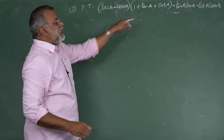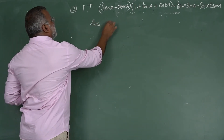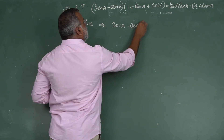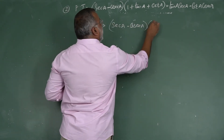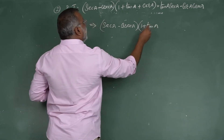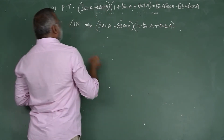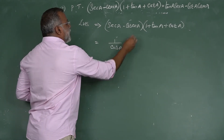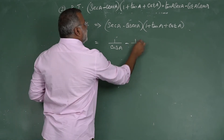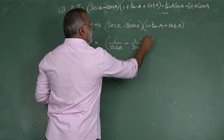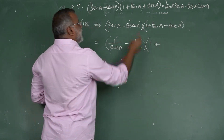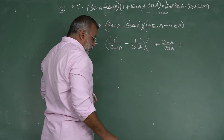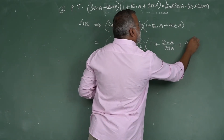Now we have one more proof. Select your LHS: sec A - cosec A multiplied by (1 + tan A + cot A). Convert: sec A = 1/cos A, cosec A = 1/sin A. Then tan A = sin A/cos A and cot A = cos A/sin A.